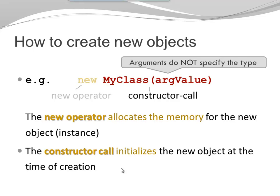Also notice that in my constructor call, I specify an argument, and arguments do not specify a type. So this is different from the parameter in our constructor declaration. First, in my constructor declaration, I specify what type needs to be passed here in my constructor call. I just pass the argument of the appropriate value. The type is no longer mentioned.